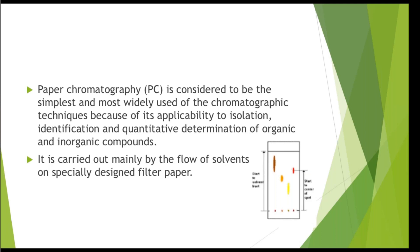Paper chromatography is carried out mainly by the flow of solvents on specially designed filter paper. Like all chromatography, it has two components — a stationary phase and a mobile phase. In paper chromatography, both phases are generally solvents or liquids. One liquid is held on the surface or between the pores of cellulose fibers of the filter paper, and the other — the mobile phase — moves over the stationary phase.